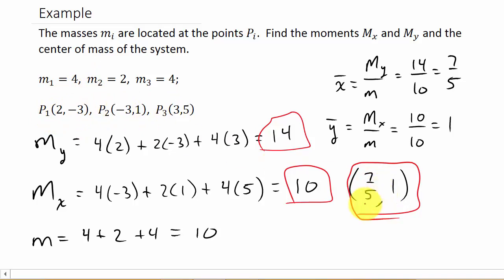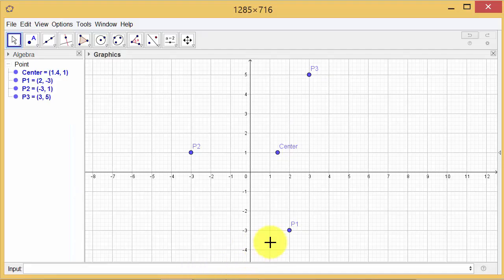Let's plot the points and the center of mass. I've already done that, and here it is. Here are your points P₁, P₂, P₃, and the center of mass plotted. That's what it would look like if you plotted it.